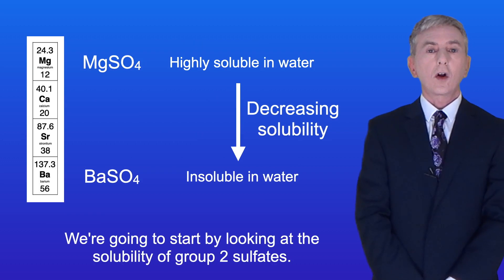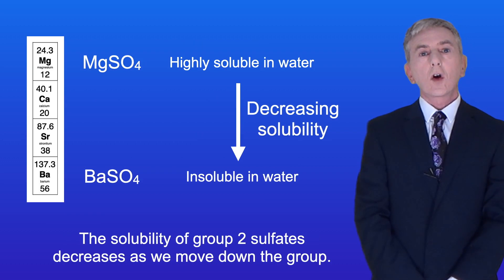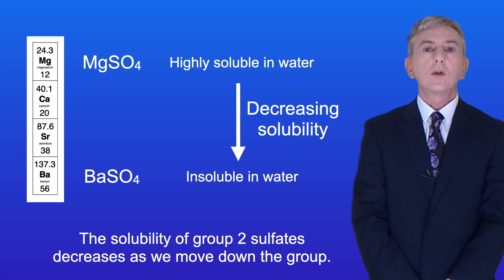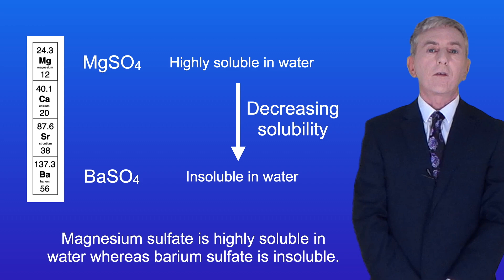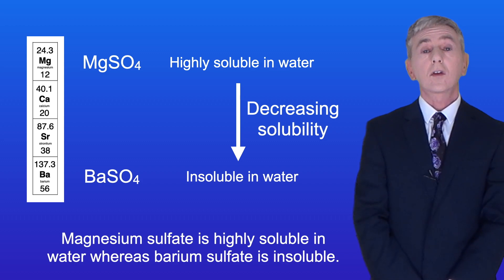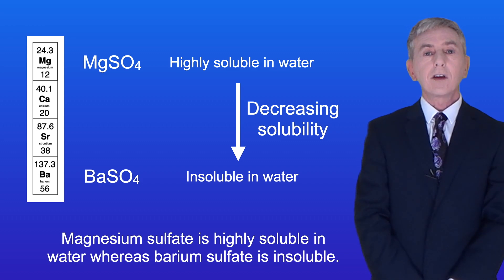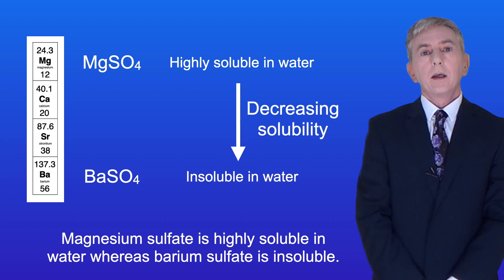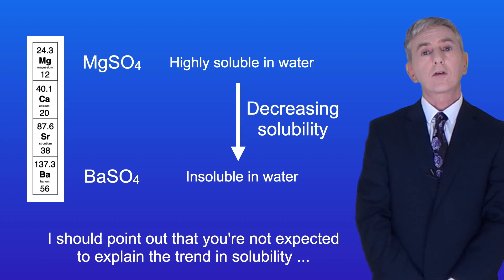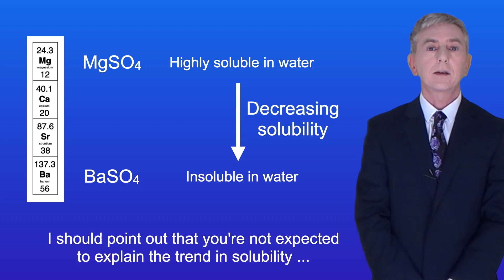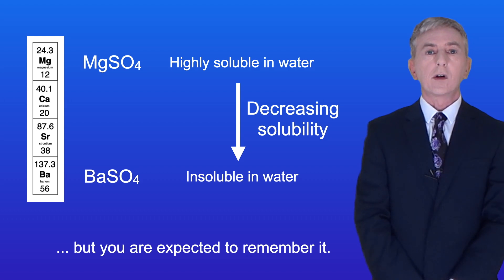We're going to start by looking at the solubility of group 2's sulfates. The solubility of group 2's sulfates decreases as we move down the group. Magnesium sulfate is highly soluble in water, whereas barium sulfate is insoluble. You're not expected to explain the trend in solubility, but you are expected to remember it.